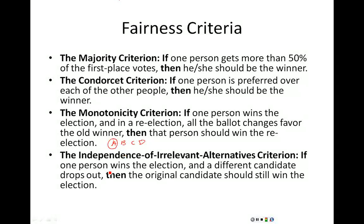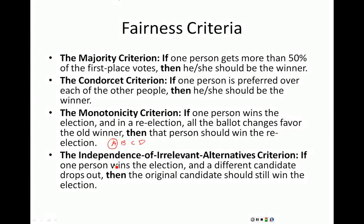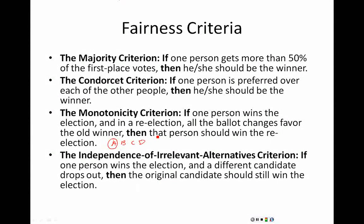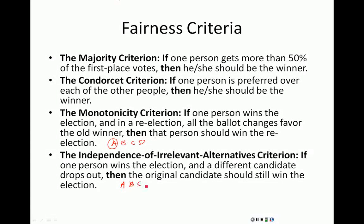The fourth type of fairness criteria is called the Independence of Irrelevant Alternatives Criterion. Basically, what this says is that if one person wins the election and a different candidate drops out, then the original candidate should still win the election. So if candidates A, B, C, and D are running and candidate A won, then candidate D drops out, it still seems like candidate A should win because they were the most popular.